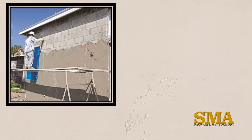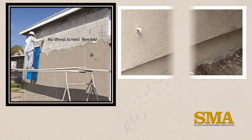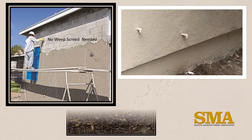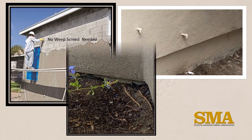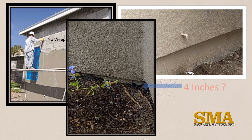A few notes about weep screed and stucco. First, weep screed is not required or even needed on stucco over concrete or masonry walls. For framed walls on concrete, the code wants 4 inches of clearance. In many cases, that 4 inches will not be there. While you should note this in your report, it does not mean a failure or problem has or will occur.